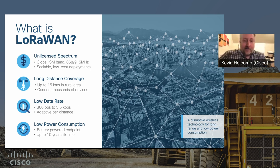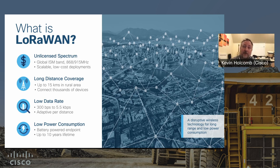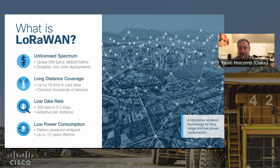So what is LoRaWAN? It uses unlicensed spectrum — the 800 or 900 megahertz ISM band, depending on where you are in the world. It's unlicensed, scalable, and really easy and low cost to deploy. You throw up a gateway with no license issues, no regulatory bodies to deal with — it's a pure ISM band. And you get kilometers of coverage: typically around 15 kilometers in a rural environment.